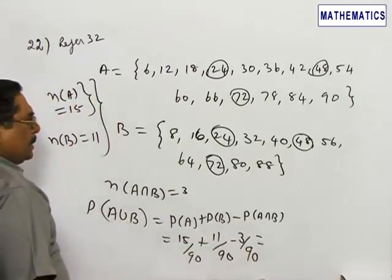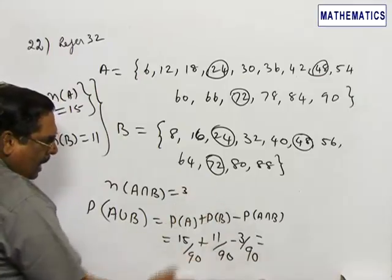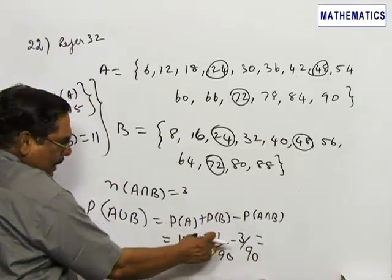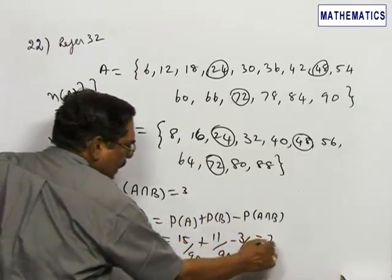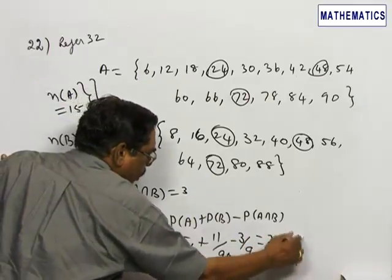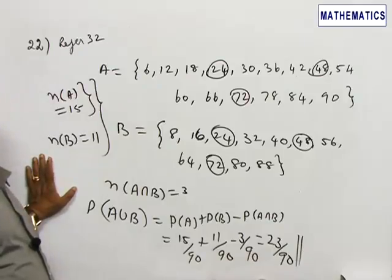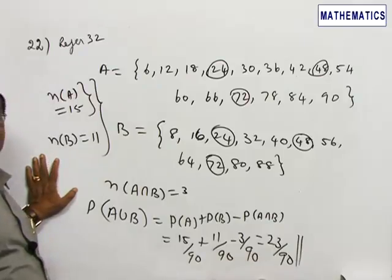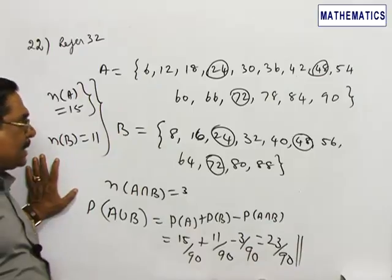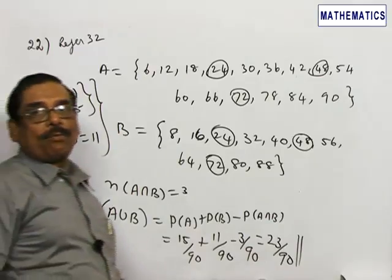Adding all these things, we get 23 by 90. This is the probability that a number chosen from 1 to 90 is divisible by either 6 or 8. Therefore, choice 4 is correct.